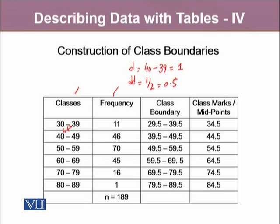Now to construct the class boundaries, we will subtract this divided difference from each lower class limit, and add this divided difference to each upper class limit. Hence, 30 minus 0.5 is 29.5, and 39 plus 0.5 is 39.5. The same way, we will subtract 0.5 from each lower class limit and add 0.5 to each upper class limit.